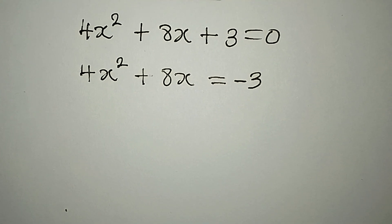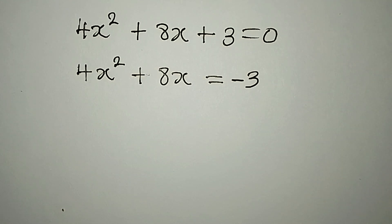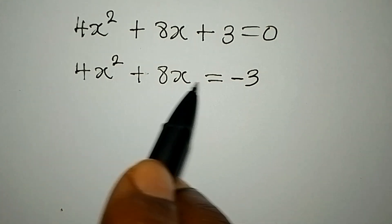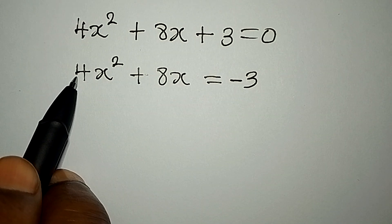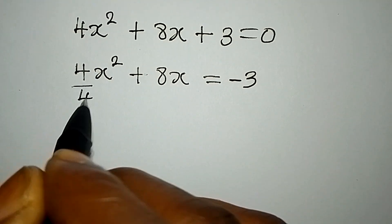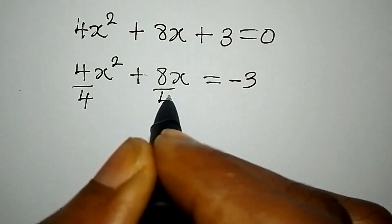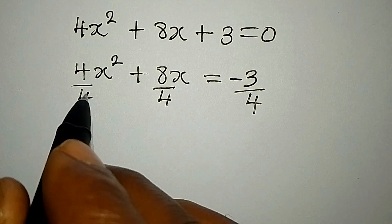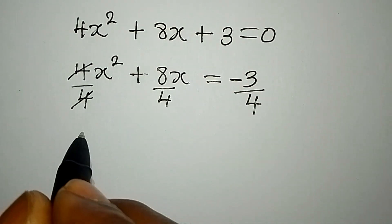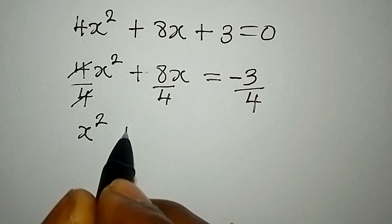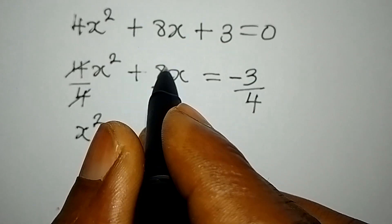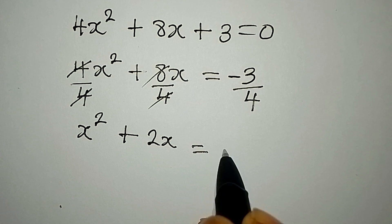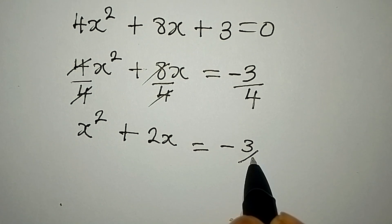The next thing we're going to do is divide everything by the leading coefficient. So we'll divide by 4, divide by 4, and divide by 4. The 4s cancel, and we get x² plus — since 8 divided by 4 is 2 — 2x, equal to negative 3 over 4.